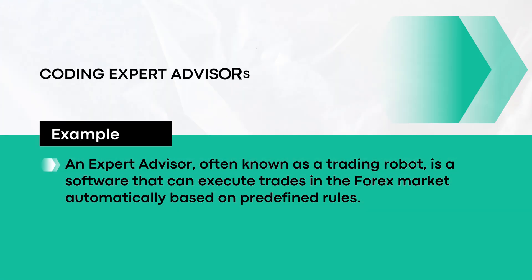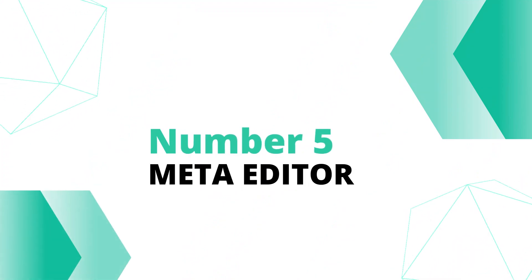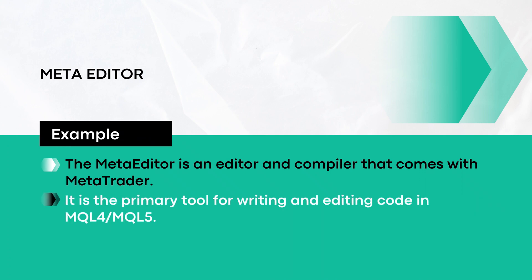Number 4: Coding Expert Advisors. An expert advisor, often known as a trading robot, is software that can execute trades in the forex market automatically based on predefined rules. Expert advisors are coded using MQL4 and MQL5 and can handle both trade management and risk management tasks. Number 5: MetaEditor. The MetaEditor is an editor and compiler that comes with MetaTrader and is the primary tool for writing and editing code in MQL4 and MQL5.